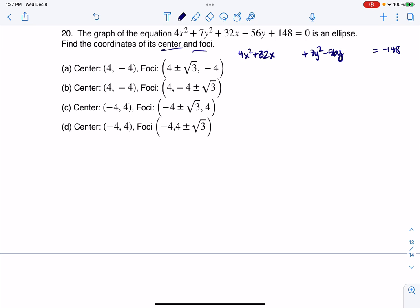And the next thing I want to do before I actually complete the square is I need to factor out the GCFs from these terms. So I'm going to have 4 times x squared plus 8x here. And then I'm going to have 7 times y squared minus 8y. And that's still going to be equal to negative 148.